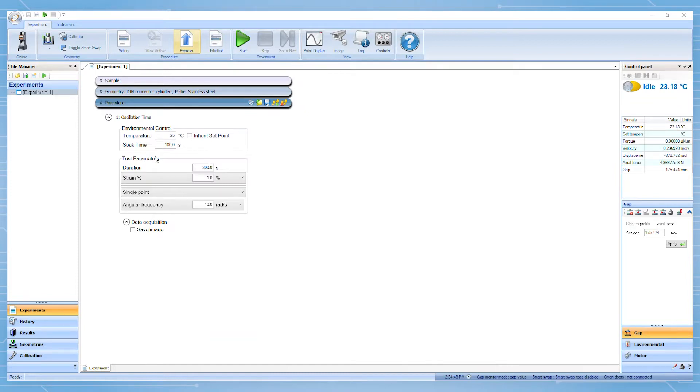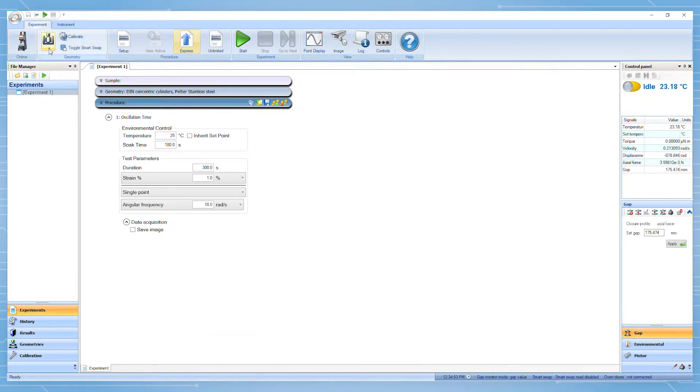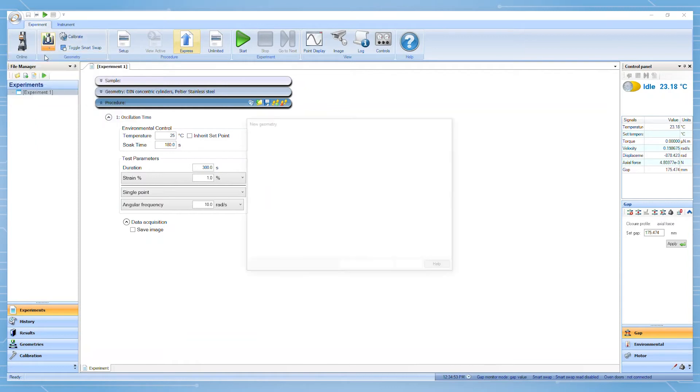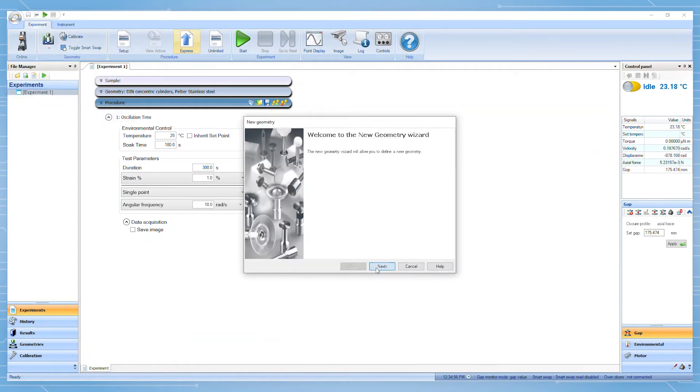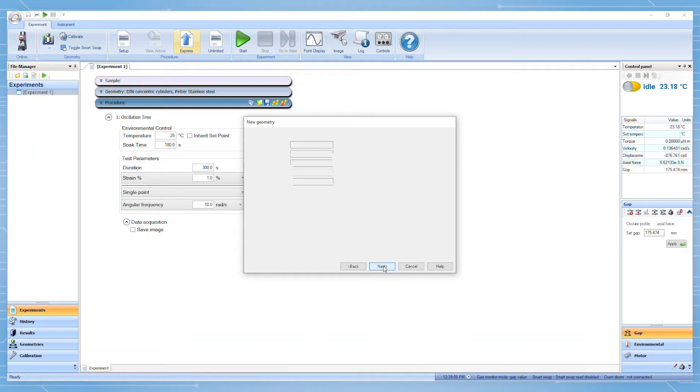In the TRIOS software, if a geometry file for concentric cylinder has not previously been created, the operator will have to create one. Under the geometry list, add a new geometry and select concentric cylinders. Enter in the relevant geometry measurements including rotor diameter, rotor length, cup diameter, and the geometry material.